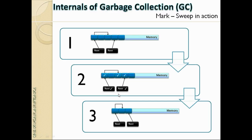So the three-step process is: mark (showing which objects are reachable), then sweep and compact — resulting in a clean, defragmented memory layout.